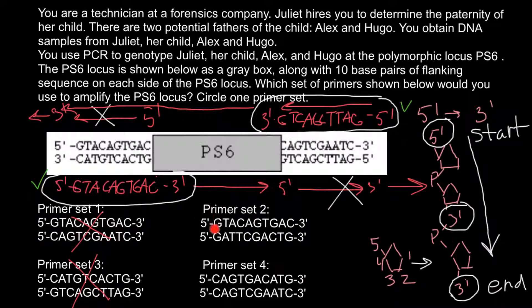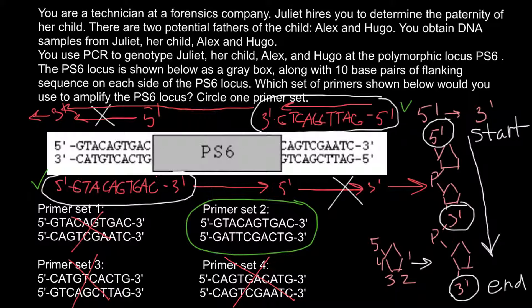Let's verify the full sequence of the correct set: G, T, A, C, A, G — and G, T, A, C, A, G — and the second primer G, T, G, A, C and T, G, A, C. This confirms it is the correct set. We can also quickly check the last set: it starts with five prime C, A, G — and we do not have C, A, G in our required sequence, so we can immediately exclude that last primer set.